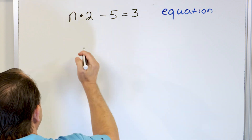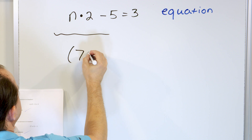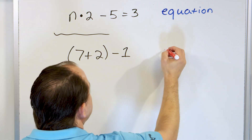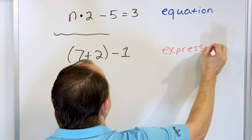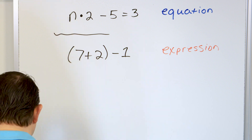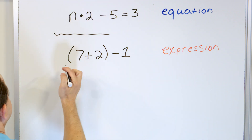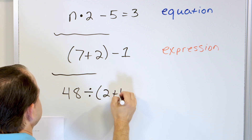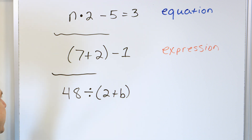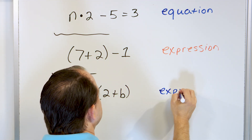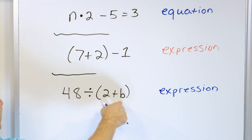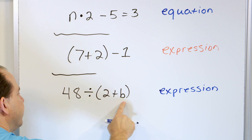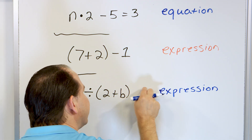That was a little bit of an aside, but a really important one. What about seven plus two minus one? Is this an equation or an expression? I don't see an equal sign, so this is an expression. I can calculate this if I want to, but it's not an equation because it's not equal to something on the right-hand side. What about 48 divided by two plus b? It has a variable in it, but there is no equal sign. No equal sign means it's not an equation — this has to be an expression. If I put different values of b in here, I'll get new answers, but it's not an equation because it's not equal to something.